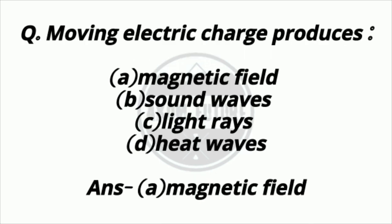Question 17. Moving electric charge produces? Option A: Magnetic field. Option B: Sound waves. Option C: Light waves. Option D: Heat waves. Answer: Option A — Magnetic field.